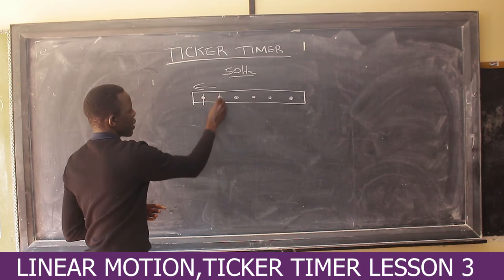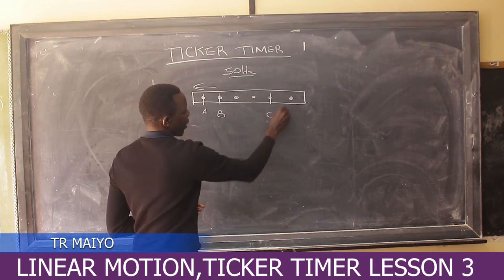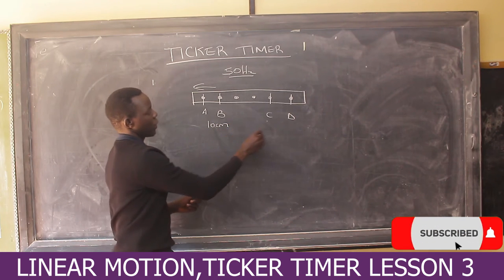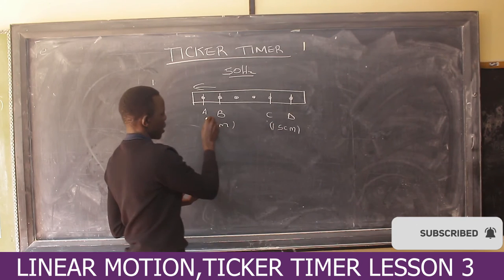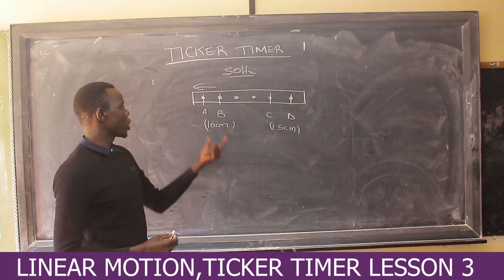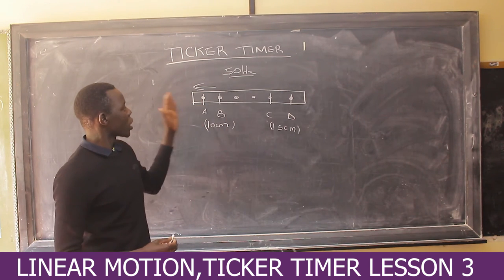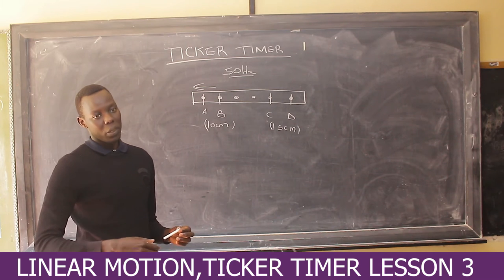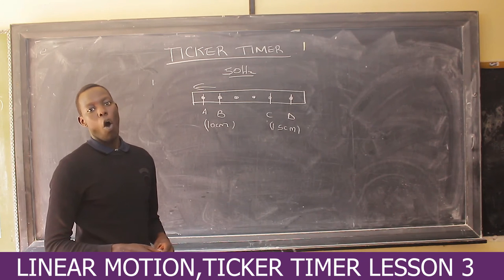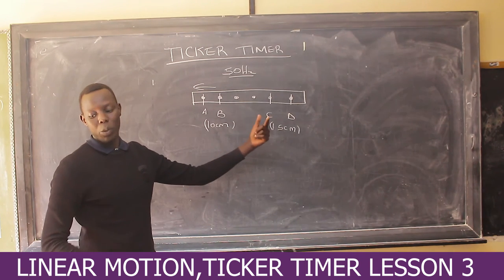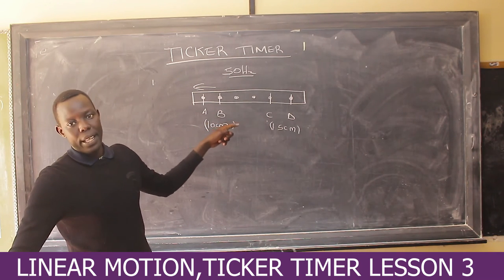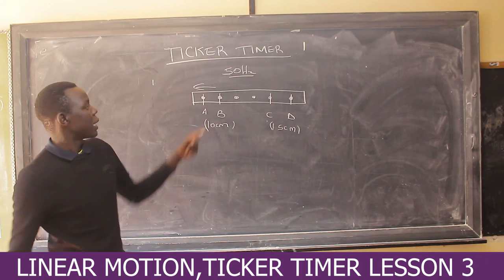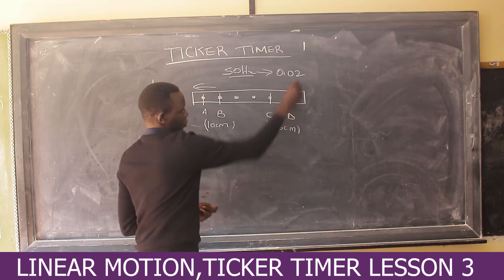I'll label sections A-B and C-D on the tape, giving the distance between A and B as 10 cm, and C and D as 15 cm. From there we can find the initial velocity and the final velocity. Section A-B gives the initial velocity; section C-D gives the final velocity. Remember, velocity is displacement over time. With a ticker timer of 50 Hz, the time between two successive dots is 0.02 seconds.